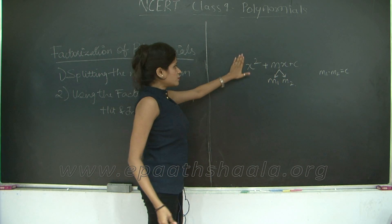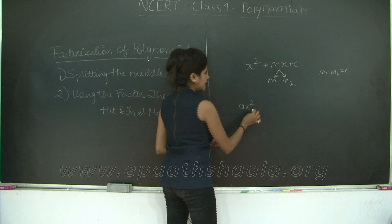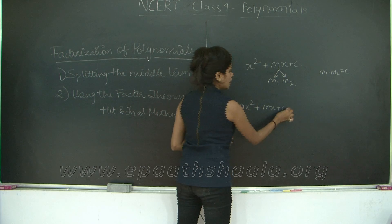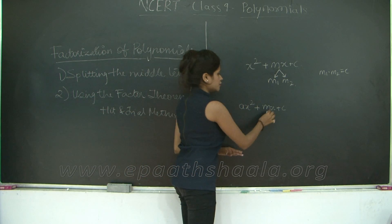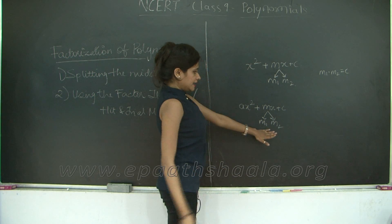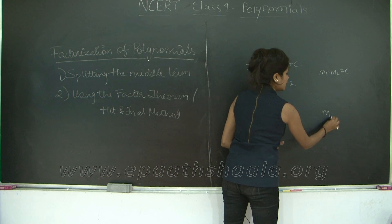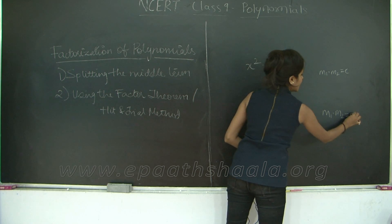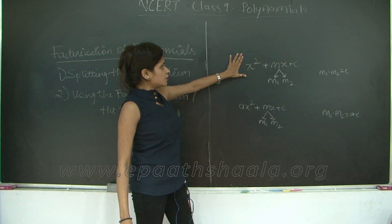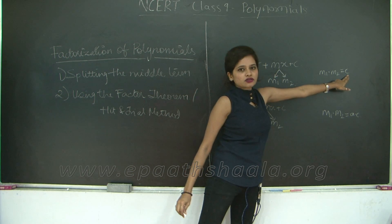Now this is when you do not have a coefficient for x squared. What if you have a coefficient for x squared? Let's say it is a, so ax squared plus mx plus c. Again you are going to split your middle term into two components m1 and m2 such that adding m1 and m2 gives you m, and m1 into m2 gives you a into c. Here it is a into c because you have a coefficient for x squared. When the coefficient of x squared is 1, it is simply c.